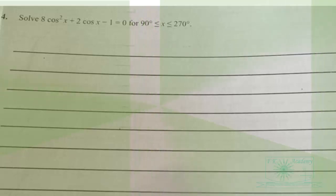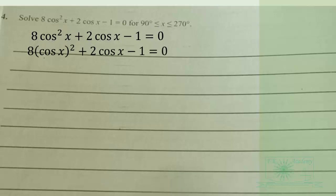So we have 8 cos squared X plus 2 cos X minus 1 equals 0. We can rewrite it so that we can do substitution for cos X. So when we let M equal cos X, wherever we see cos X here we put M there. So this will give us 8M squared plus 2M minus 1 equals 0.